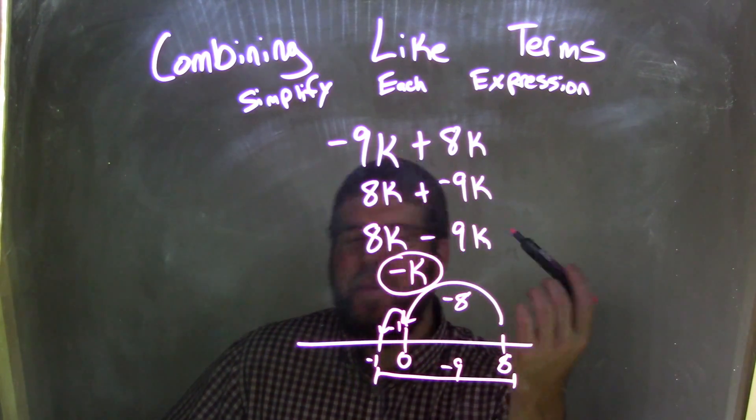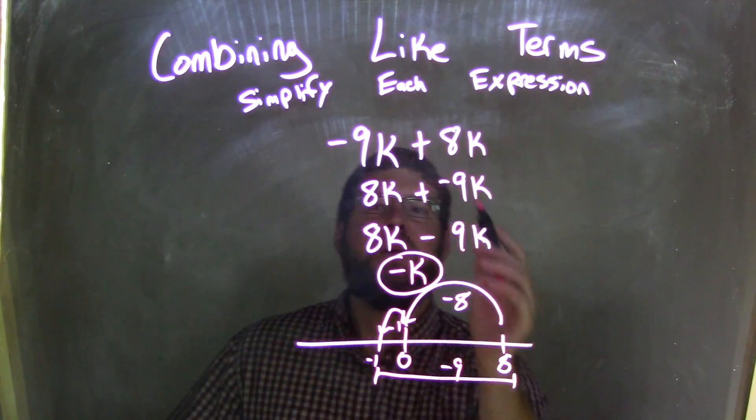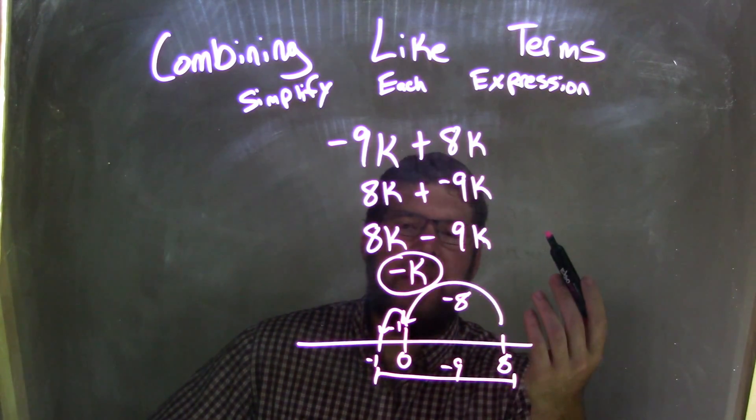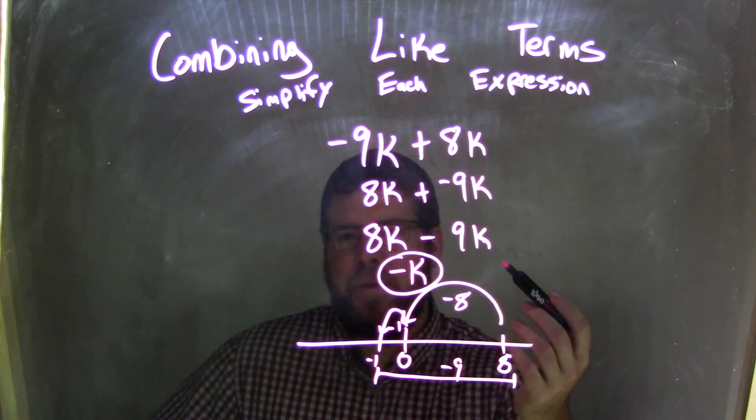So let's recap. In this way of solving, I rearranged the negative 9k and 8k to be, using the commutative property, 8k plus the negative 9k. Adding a negative is the same thing as subtraction.